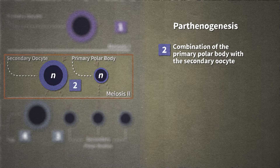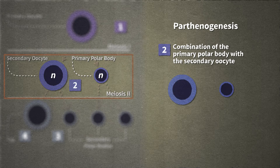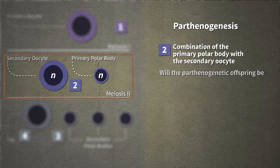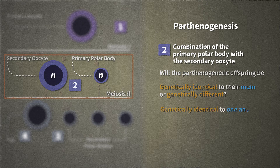Imagine that the two haploid cells produced by meiosis I — the secondary oocyte and the polar body — fused back together to yield a diploid cell, and that this new cell develops into an offspring by parthenogenesis. Will the parthenogenetic offspring be genetically identical to their mom, or genetically different? Will the offspring be genetically identical to one another, or genetically different? Will the offspring be male or female?